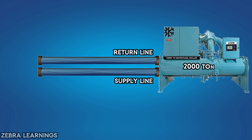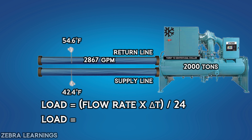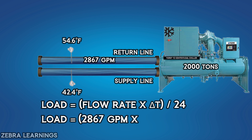A 2,000-ton chiller has a chilled water flow rate of 2,867 gallons per minute, with a supply water temperature of 42.4°F and a return water temperature of 54.6°F. Now let's apply these values in the formula.